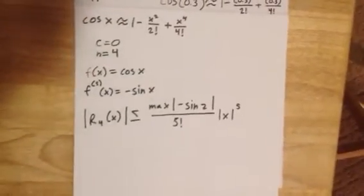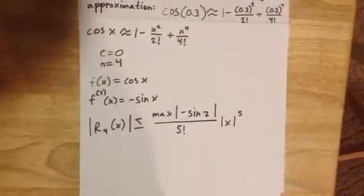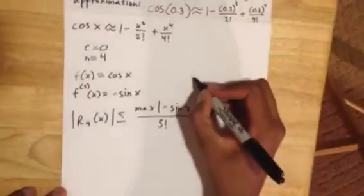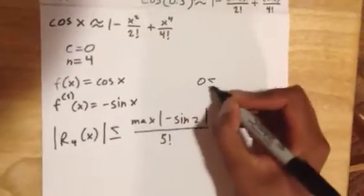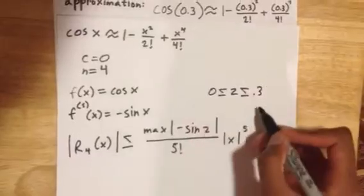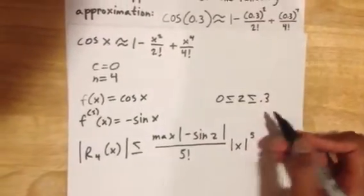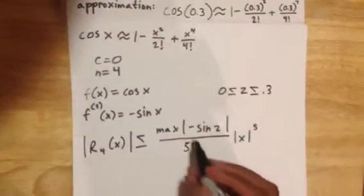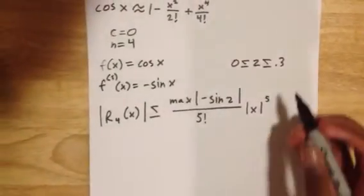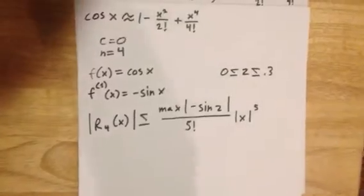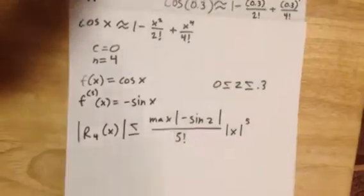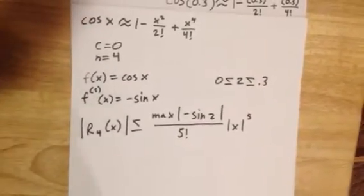So our interval for z is 0 ≤ z ≤ 0.3, where 0 is our center and 0.3 is where we are approximating. Essentially, sine of z is maximum when z = 0.3. We're also trying to maximize x⁵, and that's also maximum where x = 0.3.